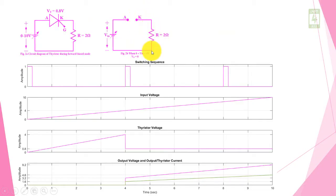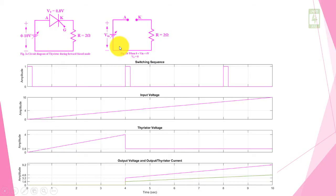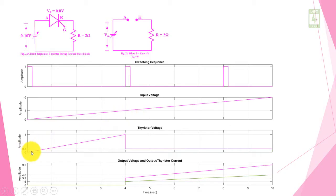So there will be no current through the resistance, and correspondingly there will be no voltage drop across this resistance, which is clearly shown here. So the input voltage will be seen across the thyristor — the input voltage varying from 0 to 4V will appear across the thyristor.